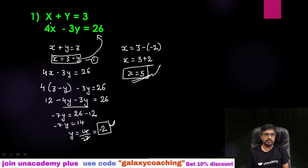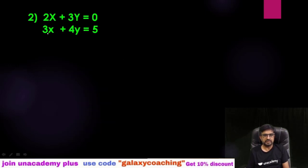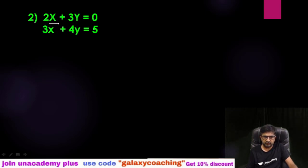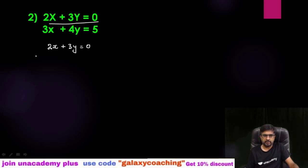The problem will arise when you have bigger numbers — at that time you have to take LCM. So I have taken one new question: question number 2. First of all, you need to select any equation and find out the value of x or y from it. The first equation given is 2x plus 3y equals 0.